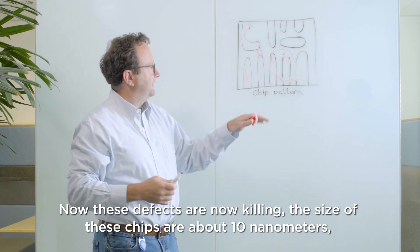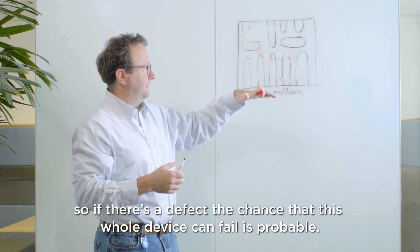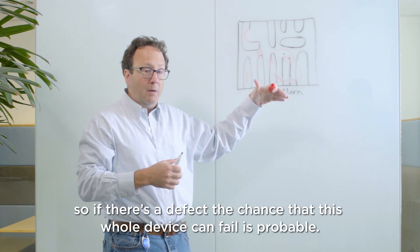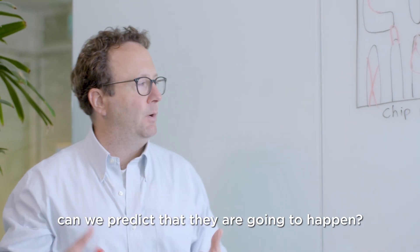Now these defects are now killing. The size of these chips now are about 10 nanometers so if there is a defect the chance that this whole device could fail is probable now. Now the first step in mitigating these defects is to measure them. Can we predict that they're going to happen?